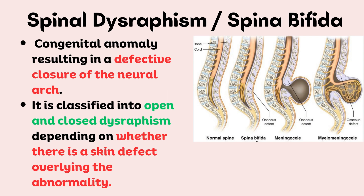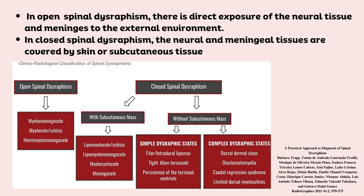Spinal dysraphism, or spina bifida, is a congenital anomaly resulting in a defective closure of the neural arch. It is classified into open and closed dysraphism depending on whether there is a skin defect overlying the abnormality. In open spinal dysraphism, there is direct exposure of the neural tissue and meninges to the external environment. In closed spinal dysraphism, the neural and meningeal tissues are covered by skin or subcutaneous tissue.